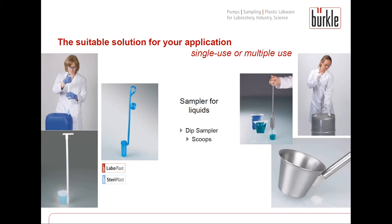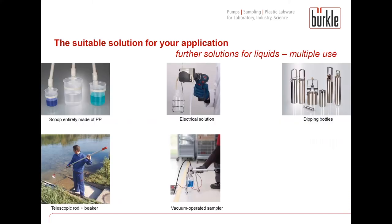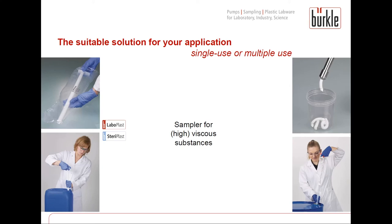For liquids, Büeckle offers both standard multiple-usable samplers and single-use solutions such as dip samplers and scoops. Further multiple-usable solutions include electrical options like the Vampire sampler, dipping bottles for large quantities and deep depths, telescopic rods, different beakers to reach far away spots, and vacuum-operated samplers with hoses that can reach depths up to 5 meters and access difficult spots. For viscous media there are also multiple-usable and single-use solutions — these samplers are used like a syringe to suck up viscous substances that are no longer free flowing.